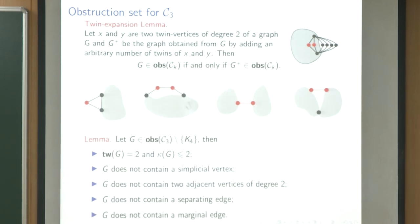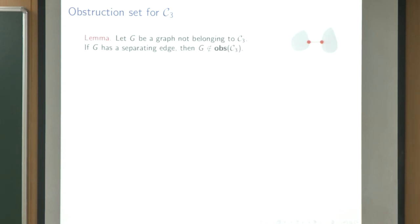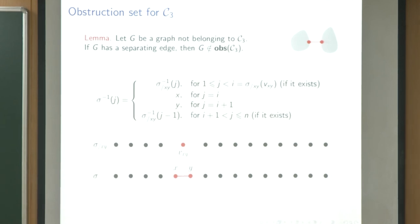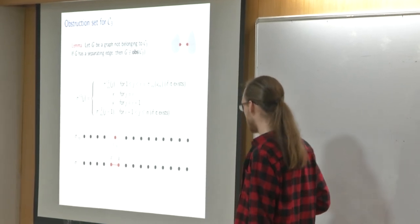They also prove that adding arbitrary twin vertices doesn't change whether a graph is in the obstruction set, which explains why the obstruction set description involves an arbitrary number of two-paths. The construction showing a large price of connectivity uses a tree Tk with k levels: the monotone lazy node search number is always 3 — place two searchers to block, then sweep a third along the path. But the monotone connected lazy node search number is 3 plus k, because you must occupy all layers before clearing toward the top.